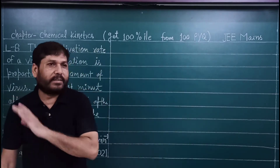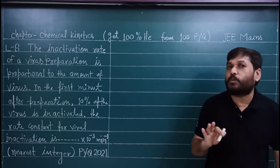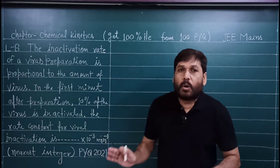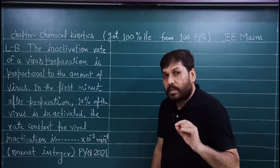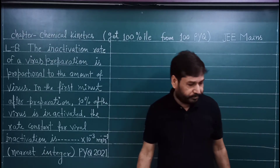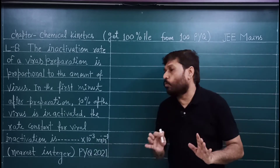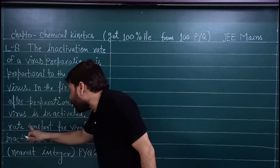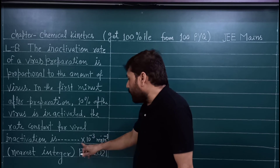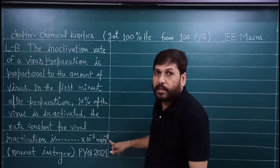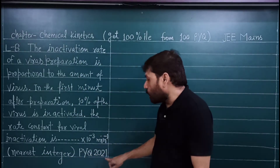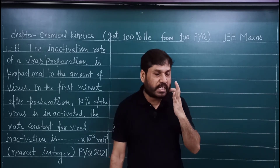The question asks: what is the rate constant of this reaction — which is given in the form of a virus? This is a simple question but it has been made deliberately confusing. The key thing I am going to teach you is how to think about any question — how to identify which formula to apply. This is a nearest integer type question from the 2021 previous year paper. You can verify this anywhere.